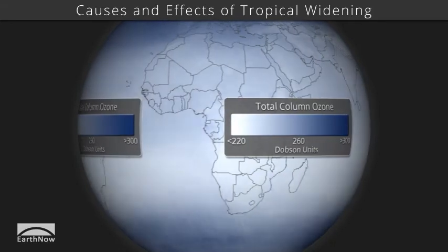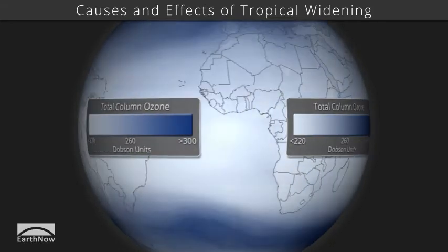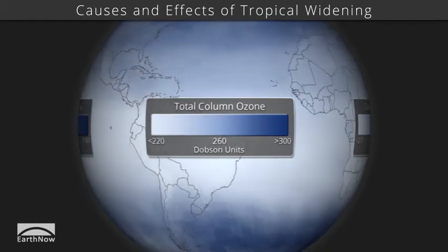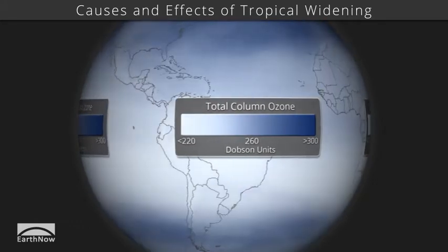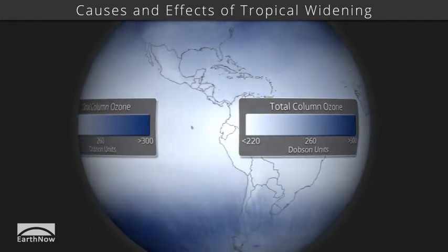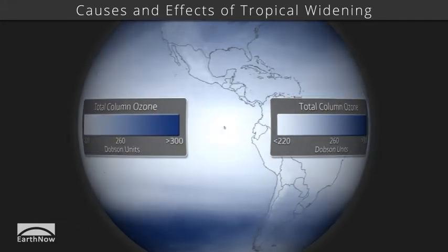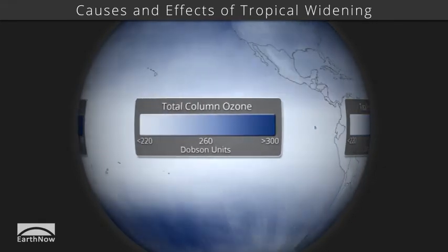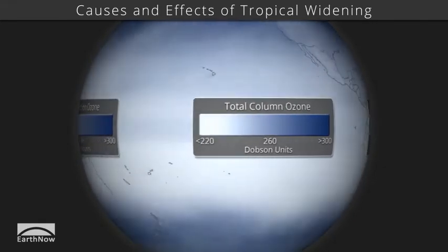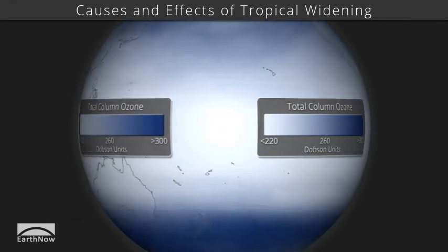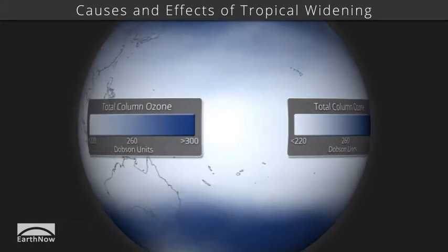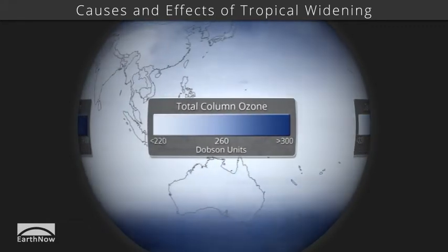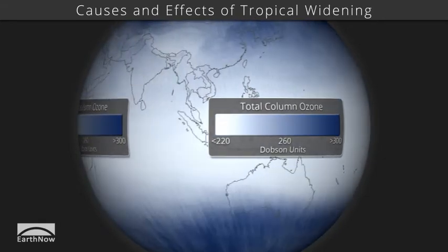scientists have measured widening of the tropics by about 10 degrees of latitude over the past 30 years. These data show a greenhouse gas called ozone, made of three oxygen atoms. Satellites measure ozone between the ground and the top of the atmosphere, or total column ozone. High amounts are shown in dark blue, low amounts in light blue to white.